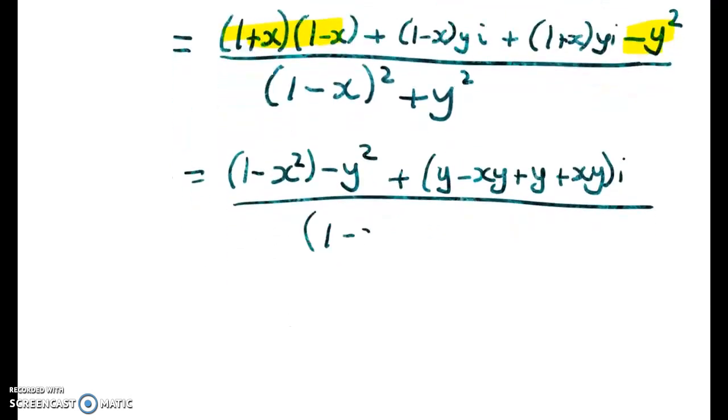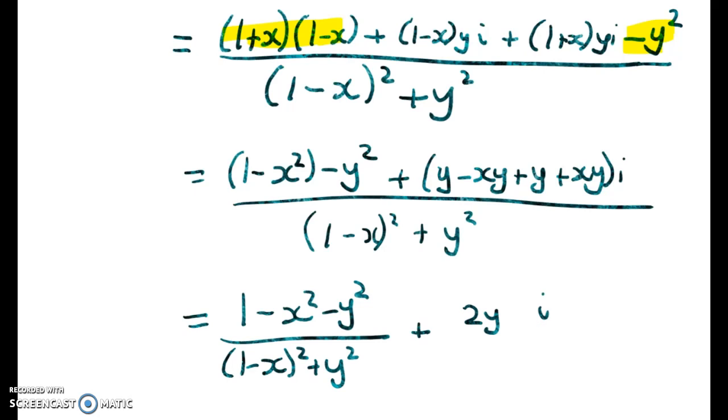And a denominator we don't really care about, but we'll pop it in anyway. So that gives me (1 - x² - y²) over this. And then here we get 2y over, oops, battery's running low, must be time to stop. So there we go.